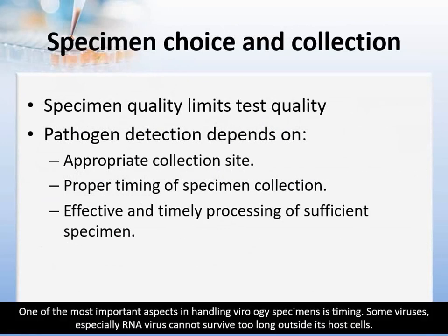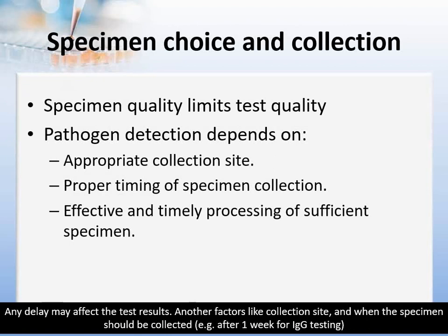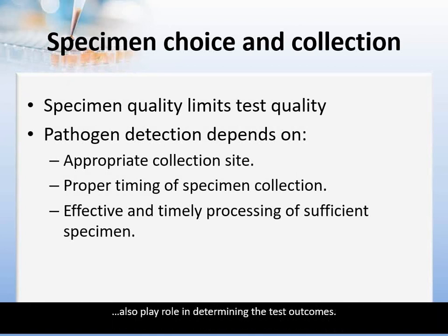One of the most important aspects in handling virology specimen is timing. Some viruses, especially RNA viruses, cannot survive too long outside of their host cell, and delay may affect the test result. Other factors like collection site and when the specimen should be collected, for example after one week of IgG testing, also play a role in determining the test outcomes.